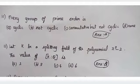And 11th question, let K be a splitting field of the polynomial x cube minus 2. Now value of K over Q, it comes to answer option D. Normally we can solve it, we can answer option D.